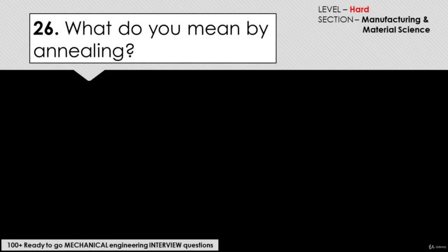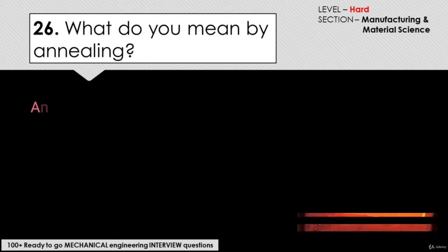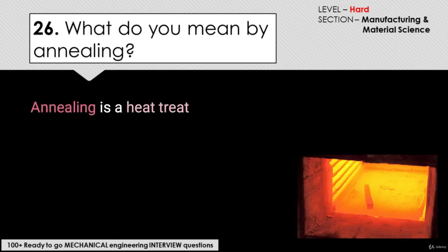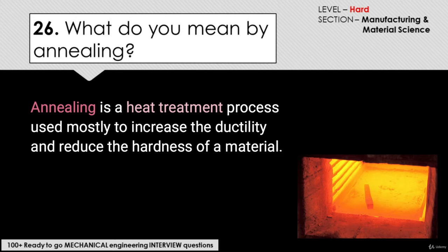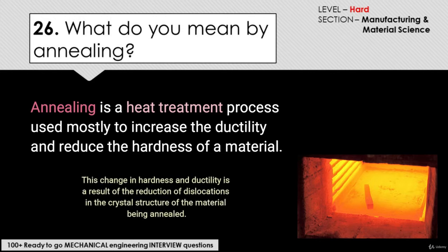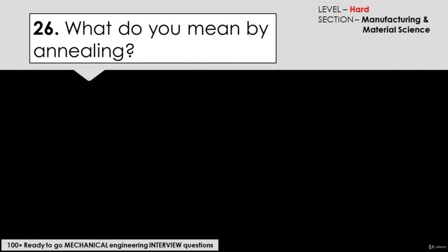Annealing is a heat treatment process used mostly to increase the ductility and reduce the hardness of a material. This change in hardness and ductility is a result of the reduction of dislocations in the crystal structure of the material.